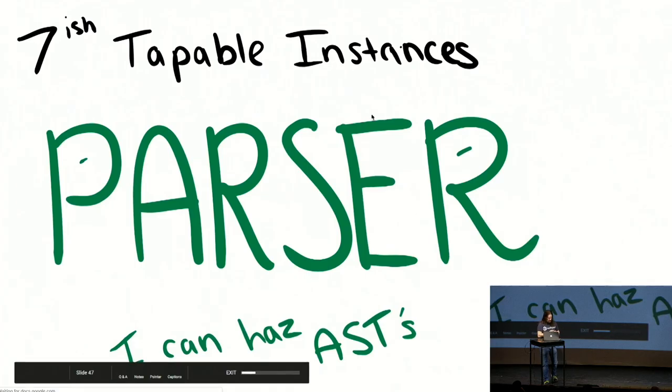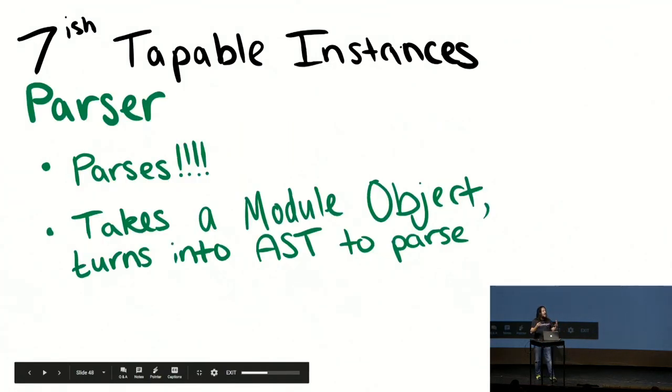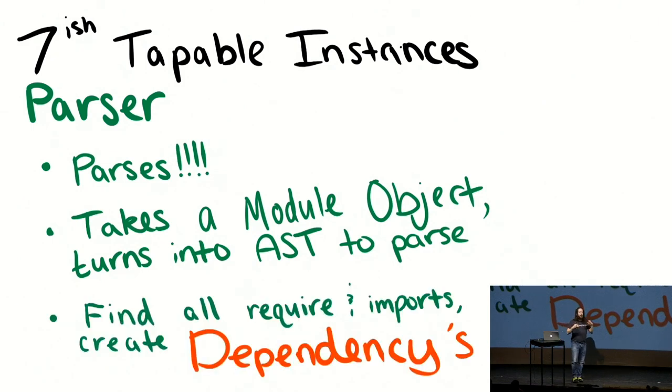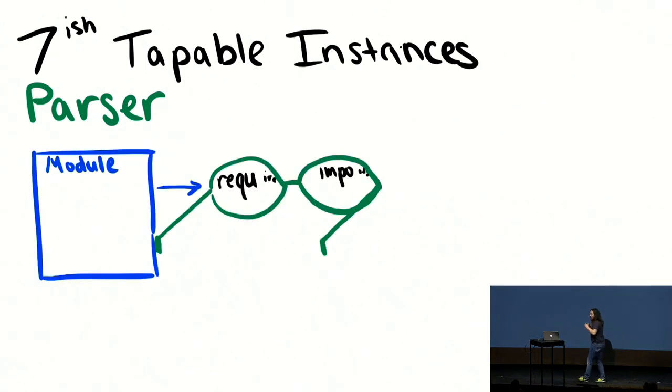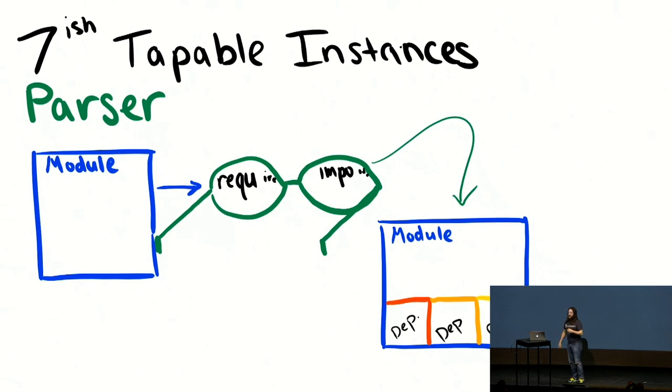Except we do something special on top of that. When we parse a file, we're looking specifically for import statements, require statements, dynamic import statements. What we do is that we take this module object, we parse the string, and then we're going to create what we call dependencies. We have our module object. It's so beautiful. We pass it through our little parser glasses. We're looking for requires. We're looking for import statements. And then, we add those references to the module itself.